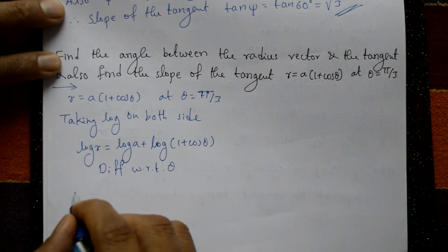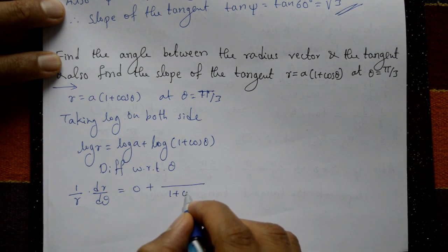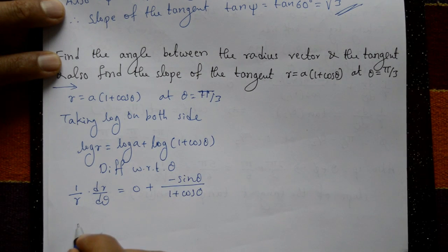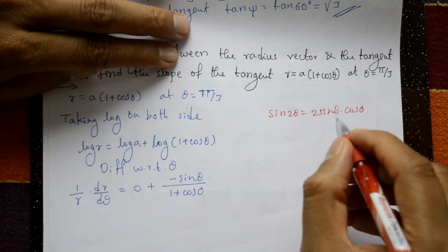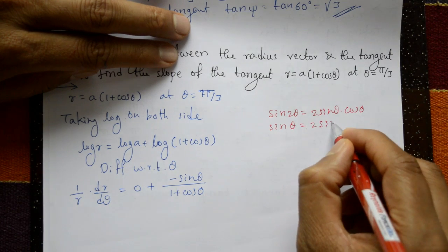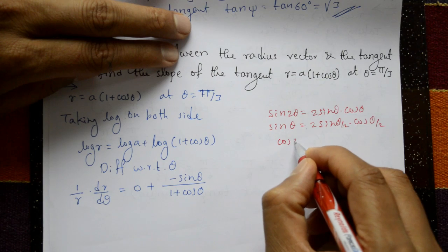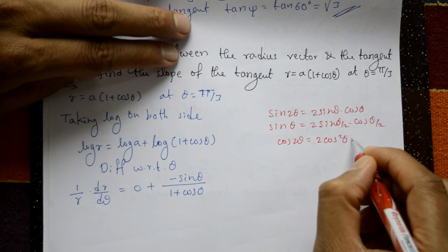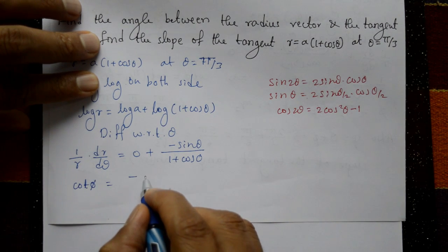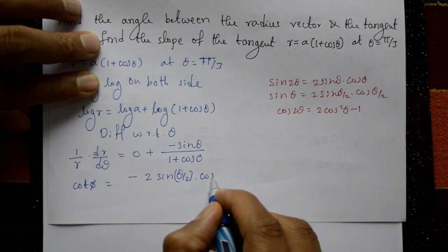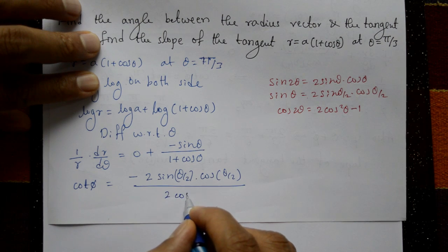Differentiating with respect to θ: (1/r)·(dr/dθ) = 0 + (1/(1 + cos θ))·(−sin θ). Now sin θ = 2·sin(θ/2)·cos(θ/2) and 1 + cos θ = 2·cos²(θ/2). So cot φ = −[2·sin(θ/2)·cos(θ/2)] / [2·cos²(θ/2)].